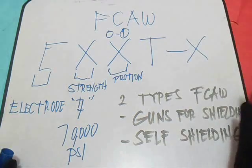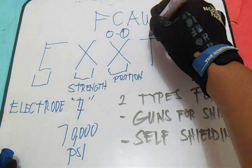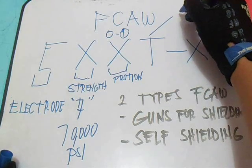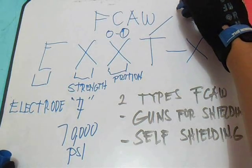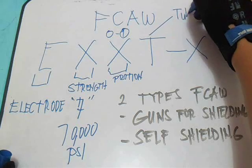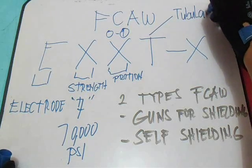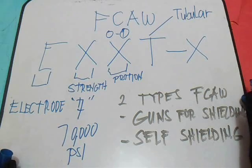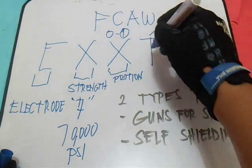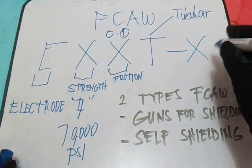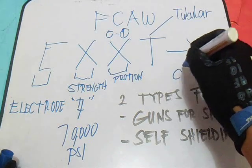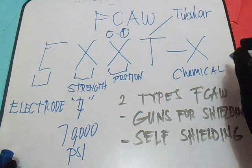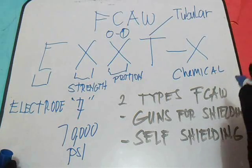What is T? T means tubular. And the final X refers to the chemical and operating characteristics.